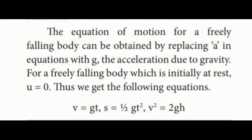The equations of motion for a freely falling body can be obtained by replacing 'a' in the equations with 'g', the acceleration due to gravity. For a freely falling body which is initially at rest, u is equal to 0. Thus we get: v = gt, s = ½gt², and v² = 2gh.